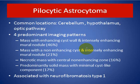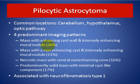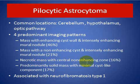Pilocytic astrocytoma: common locations are the cerebellum, hypothalamus, and optic pathway. On MRI: a mass with enhancing cyst wall and intensely enhancing mural nodule in about 46%; mass with non-enhancing cyst and intensely enhancing mural nodule in 21%; nodular mass with central non-enhancing zone in 16%; and predominantly solid mass with minimal cystic component in 17%.